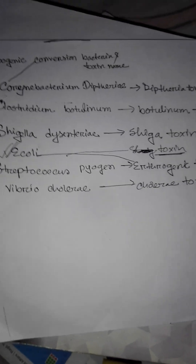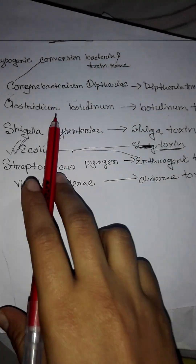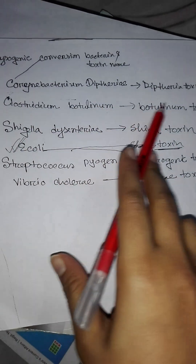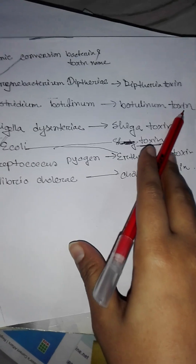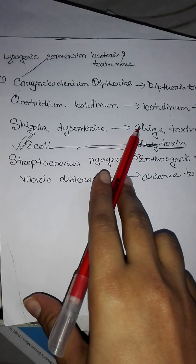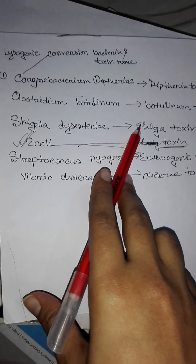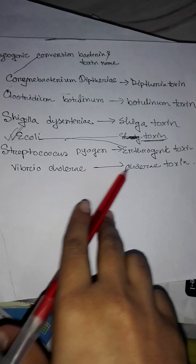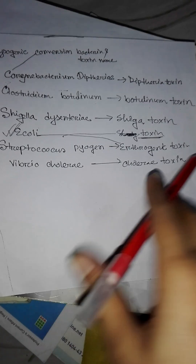To summarize: Corynebacterium diphtheriae produces diphtheria toxin, Clostridium botulinum produces botulinum toxin, Shigella dysenteriae produces Shiga toxin, Streptococcus pyogenes produces erythrogenic toxin, and Vibrio cholerae produces cholera toxin.